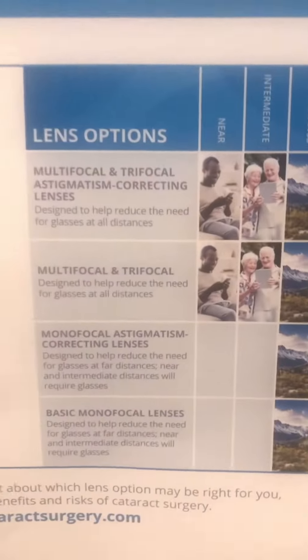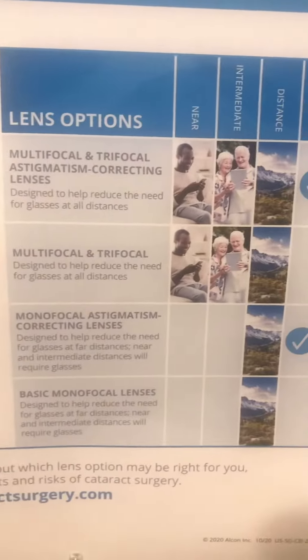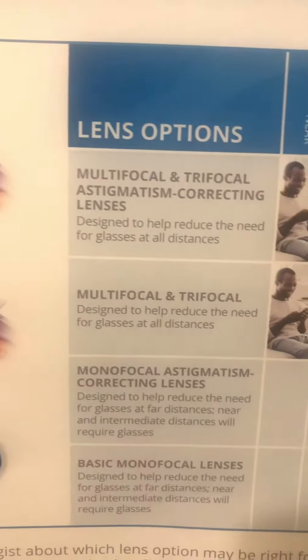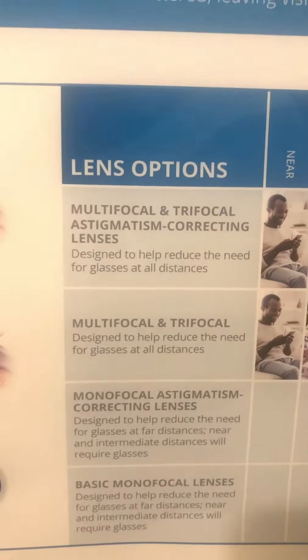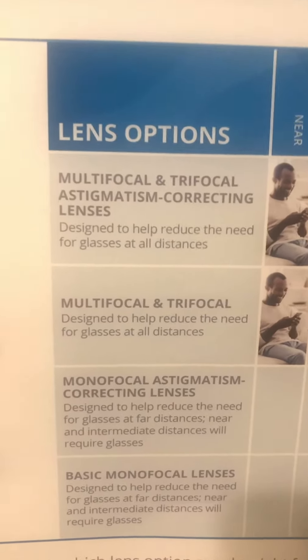Now if you look at the lens options, this is important. First, focus on the near, intermediate, distance, and astigmatism columns right there so that you can understand what I'm talking about. These are the lens options that people want.